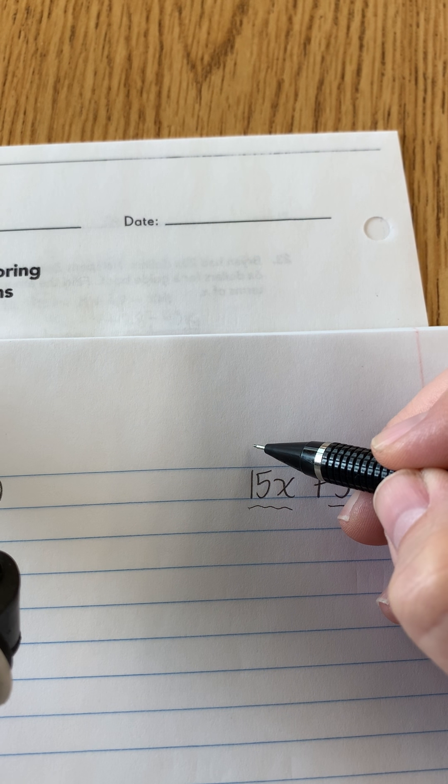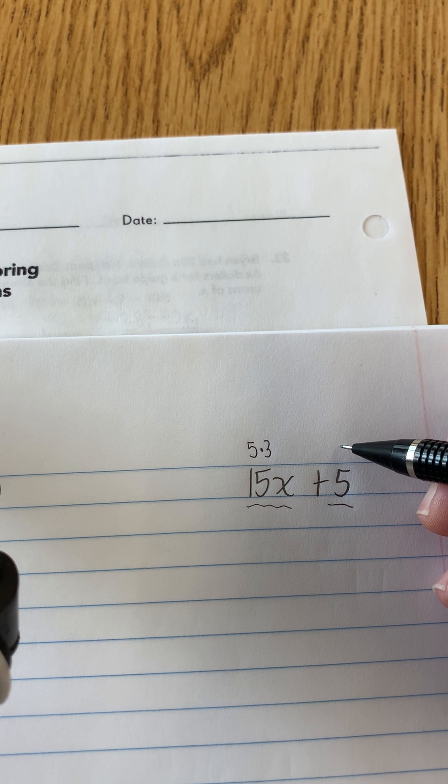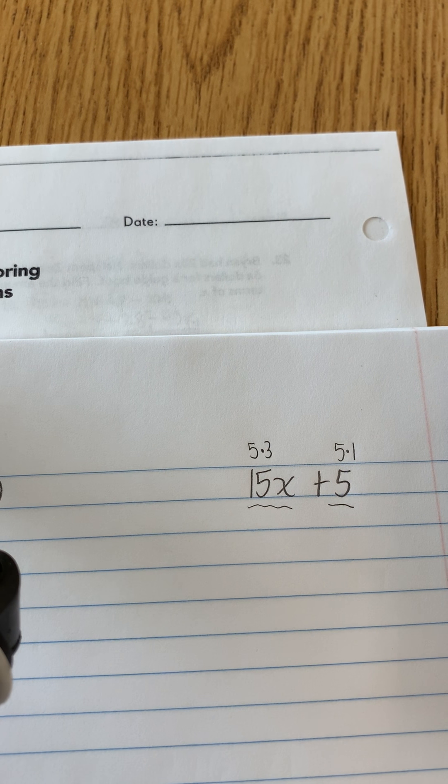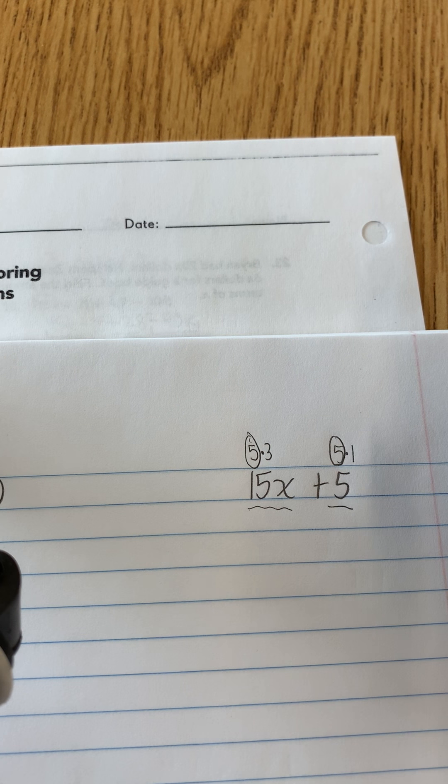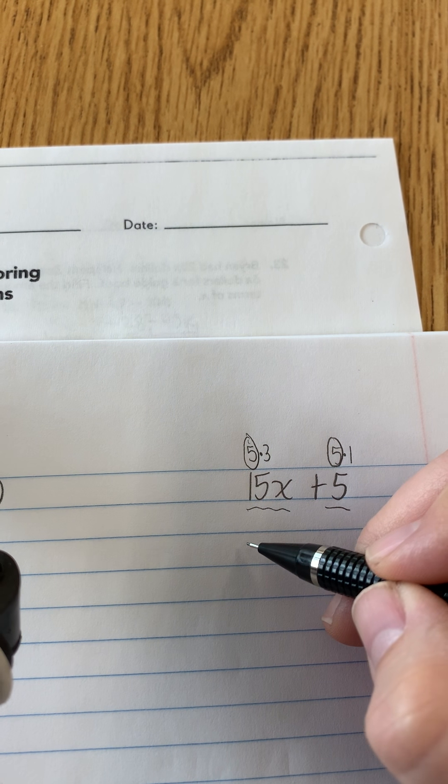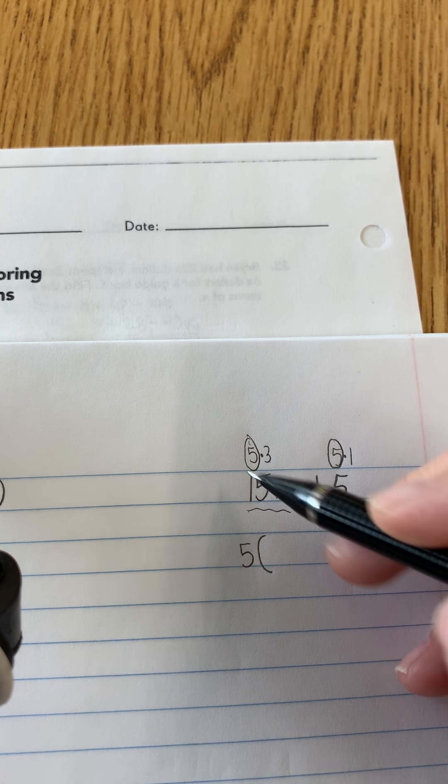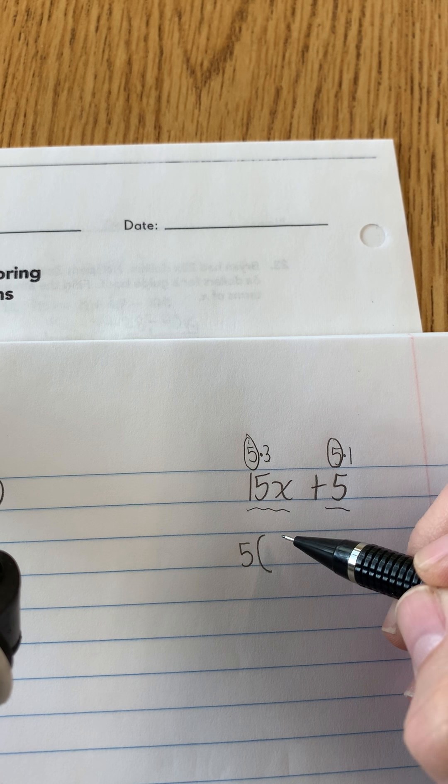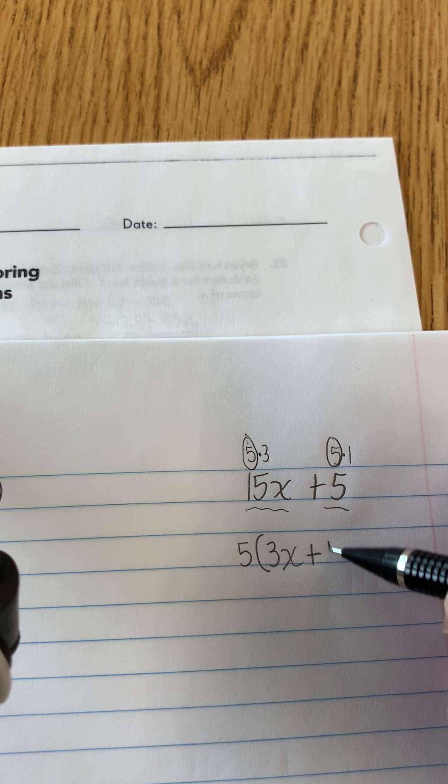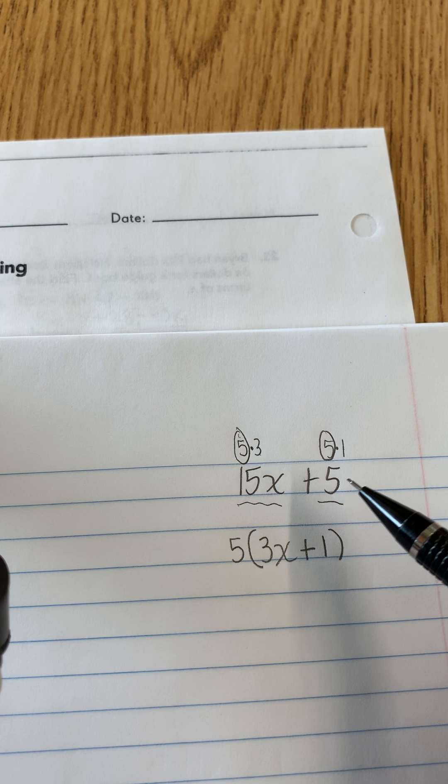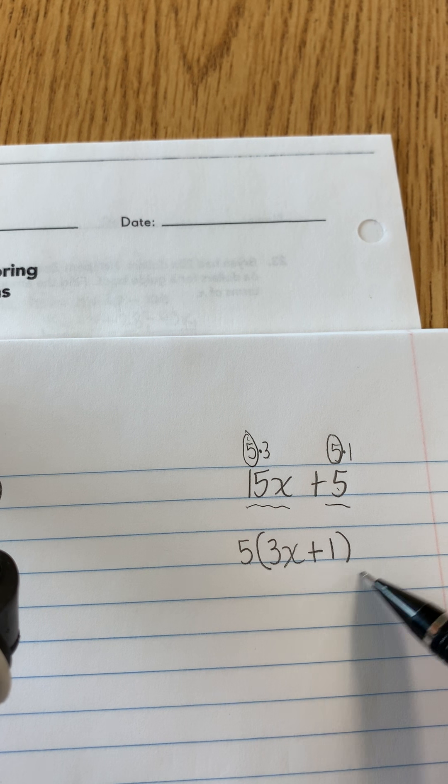So 15x, the 15 is 5 times 3, right? And 5 is 5 times 1. Does that make sense? Well they both have a 5 in common. So that's what's going to be factored out. You're going to put a 5 and 3 is what's left. So instead of 15x, we're going to write 3x plus 1 after the 5 is factored out is what's left. So you're starting with this and you're factoring out the 5 to make it look like this.